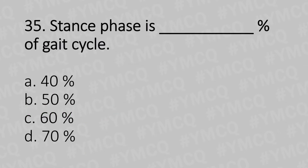Moving to our 35th question. Stance phase is what percentage of the gait cycle? Option A: 40%. Option B: 50%. Option C: 60%. Option D: 70%. And the answer is Option C: 60%.